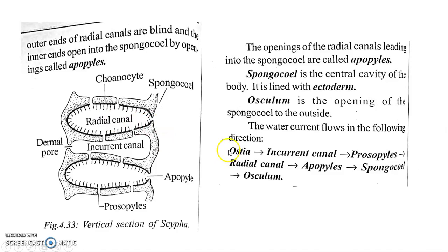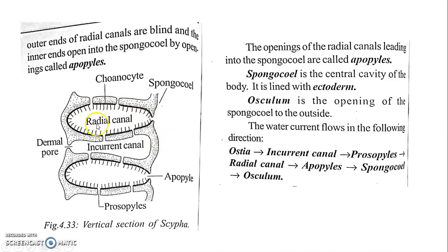Here is the flow chart of water movement. Through the Dermal Ostea, water enters into the organism. From the Ostea, water moves into the incurrent canal. Then, through the Prosophile, it enters the radial canal. The radial canal has choanocytes (collar cells) with flagella for creating the water current.